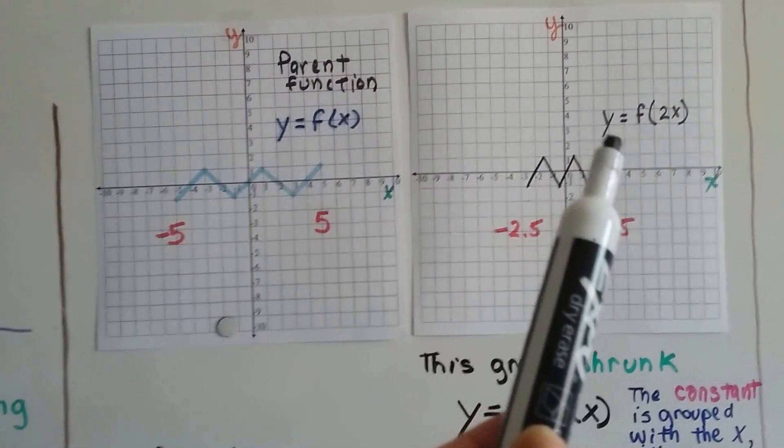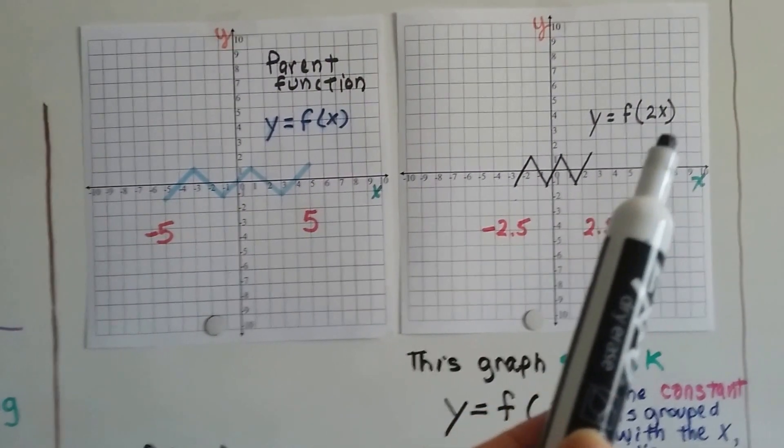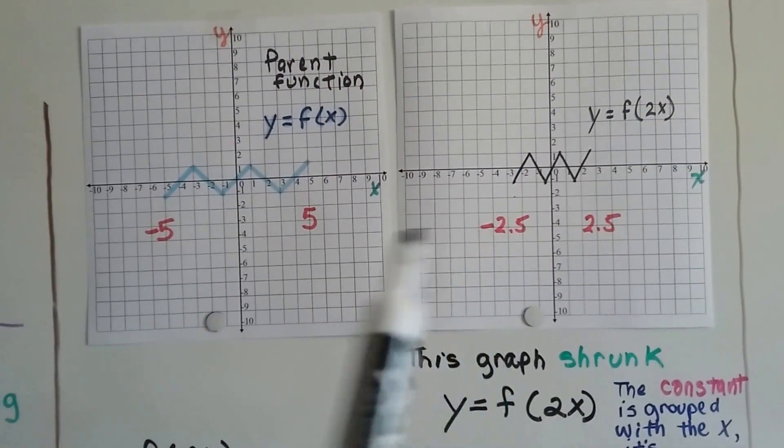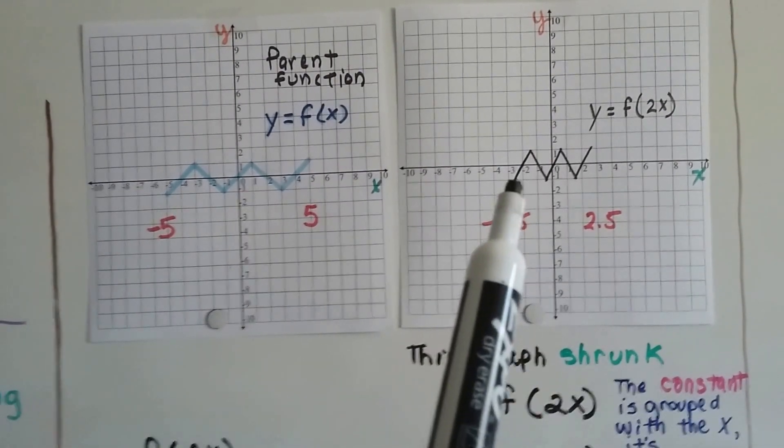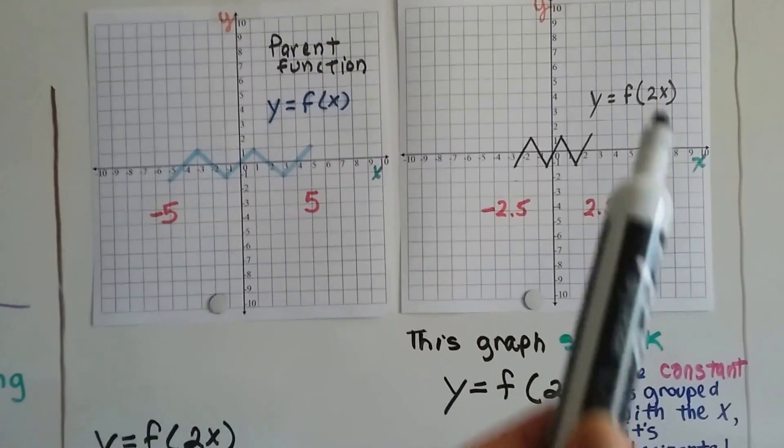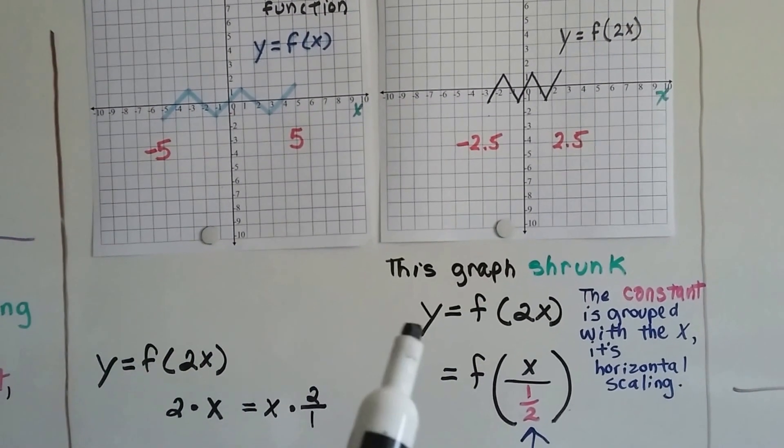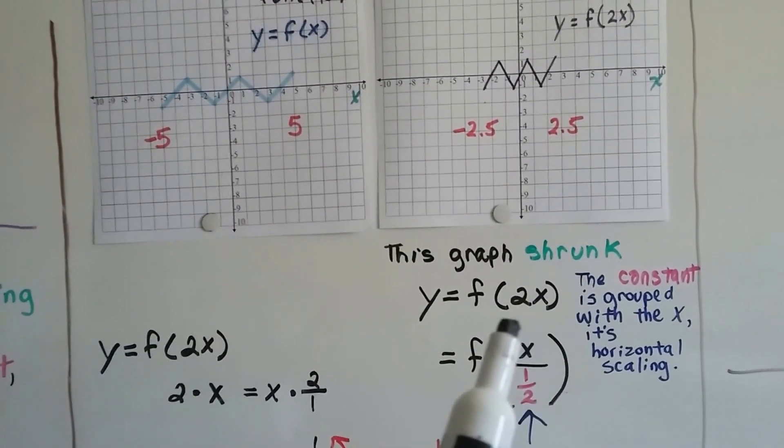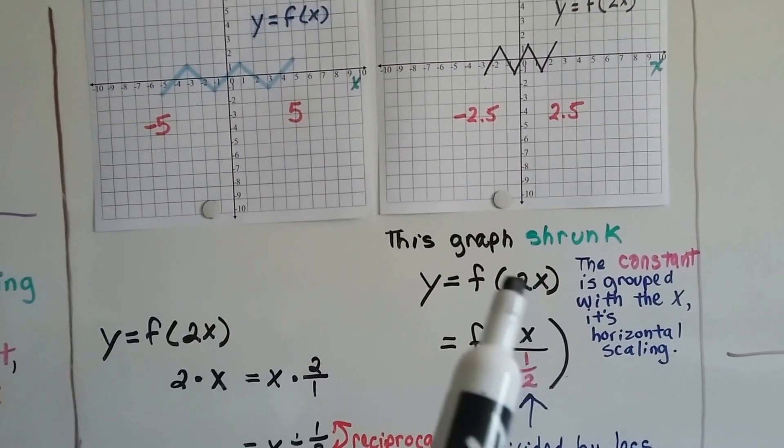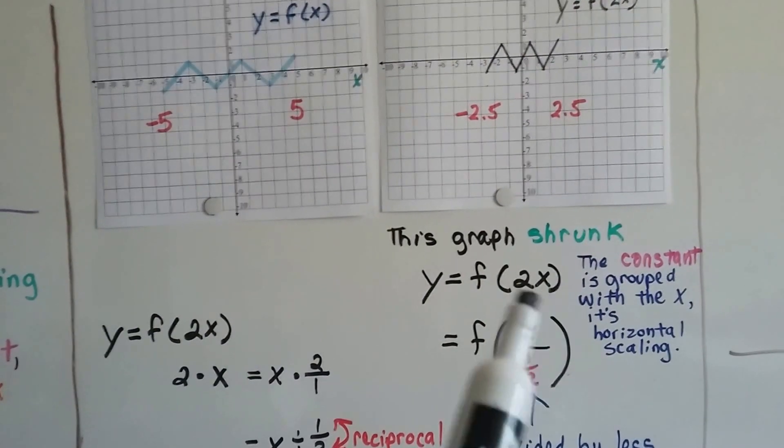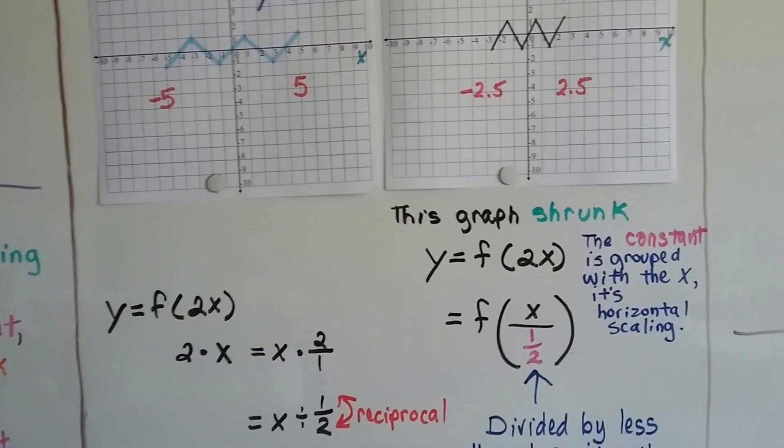So y equals a function 2 times x is going to shrink it. We went from a negative 5 to a negative 2 and a half. That cut it in half. So this graph shrunk. The y equals the function of 2 times x. This constant is grouped with x. See how it's grouped in the parentheses? So it's horizontal scaling.